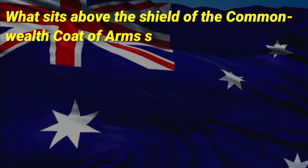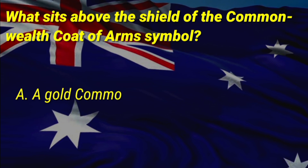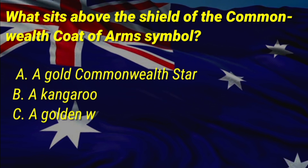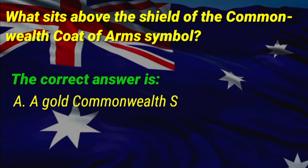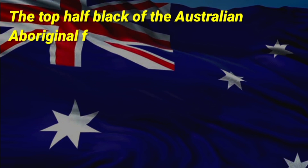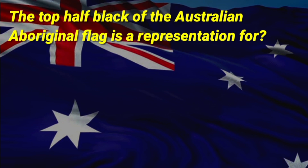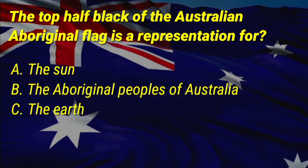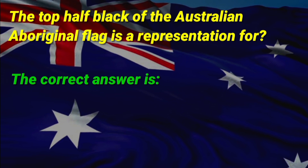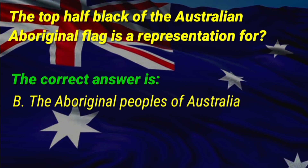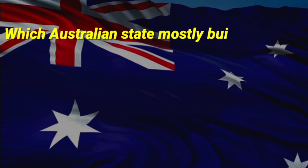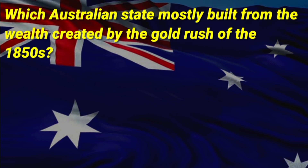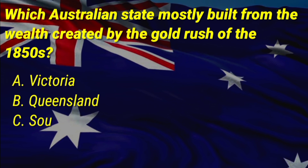What sits above the shield of the Commonwealth coat of arms symbol? A: a gold Commonwealth Star, B: a kangaroo, C: a golden wattle. The correct answer is A, a gold Commonwealth Star. The top half black of the Australian Aboriginal flag is a representation for what? The correct answer is B, the Aboriginal peoples of Australia. Which Australian state was mostly built from the wealth created by the gold rush of the 1850s? The correct answer is A, Victoria.